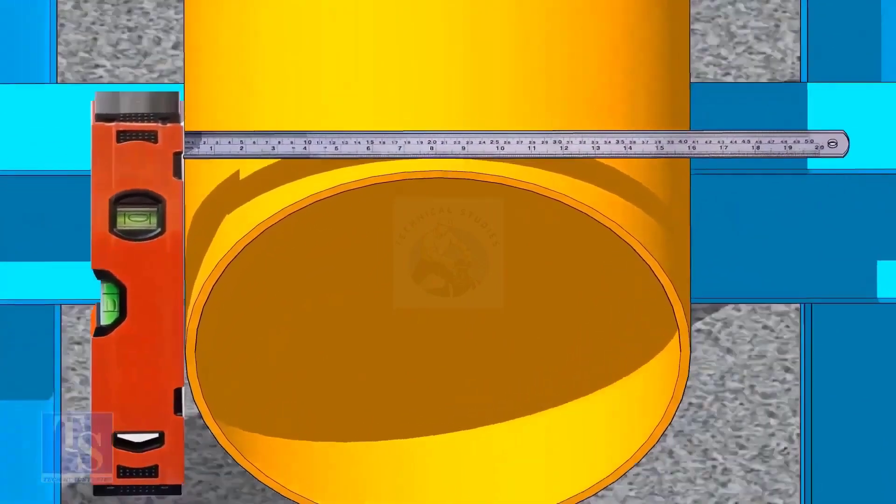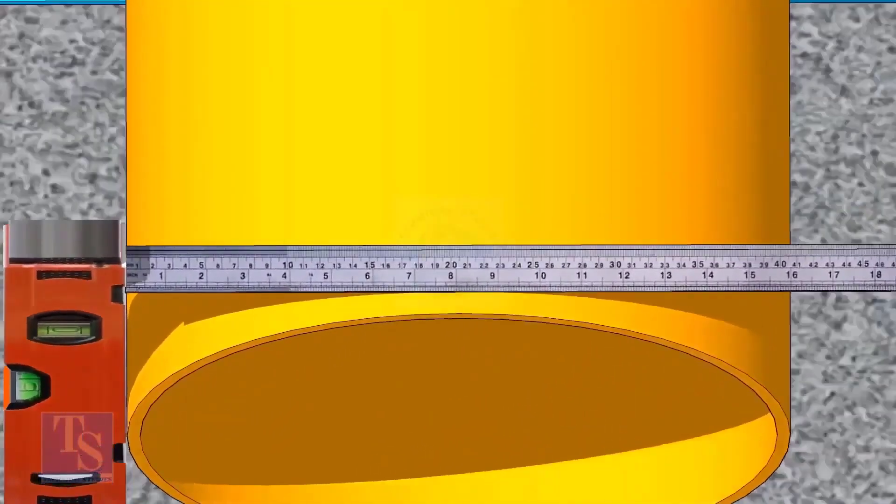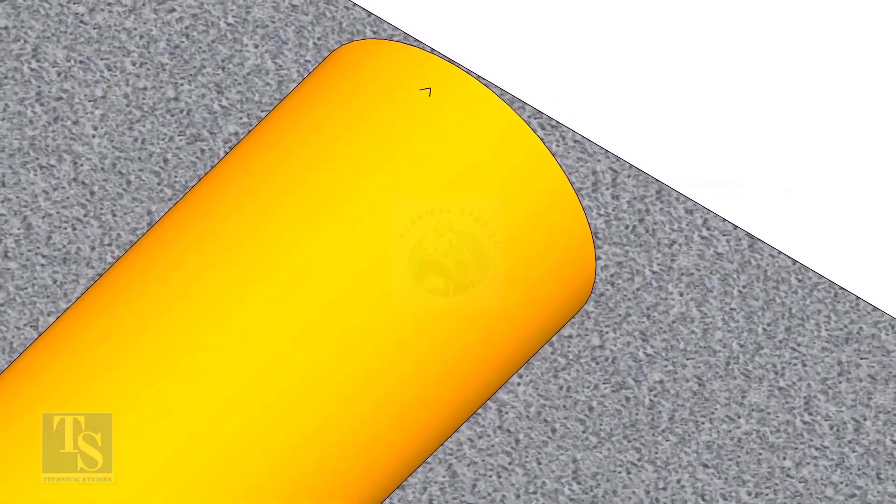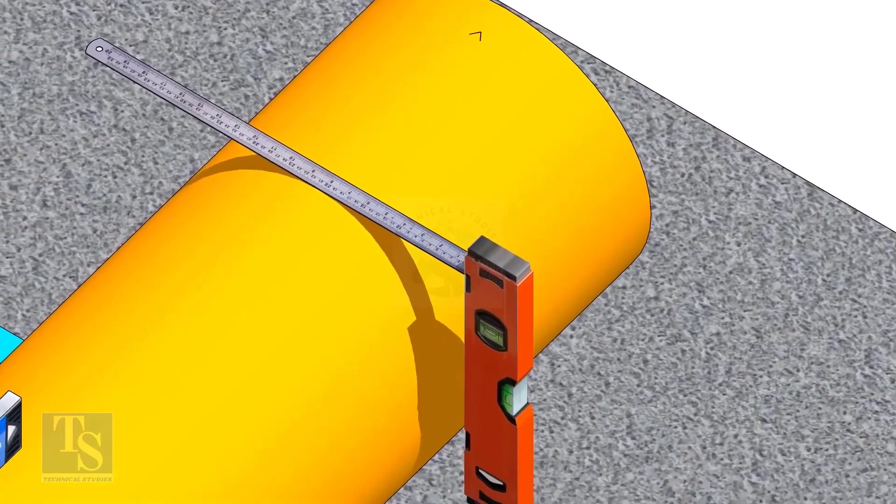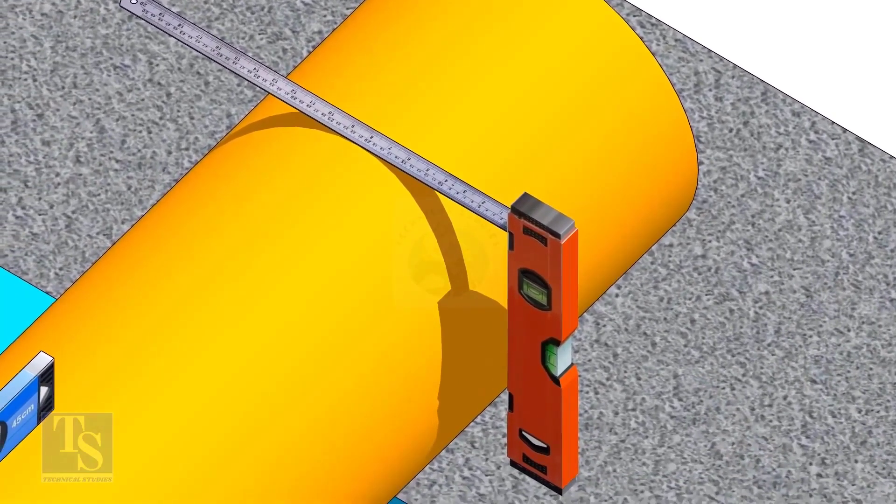Mark half OD at 300mm apart. This pipe OD is 406mm, so mark 203mm from the vertical level bottle, on the top of the pipe. And draw a line connecting these marks.